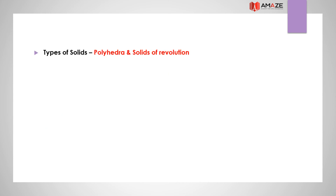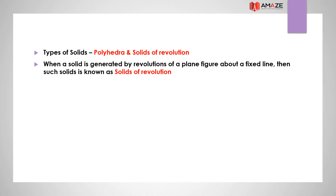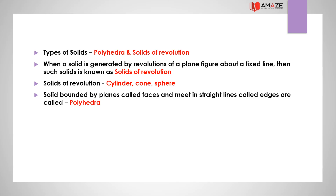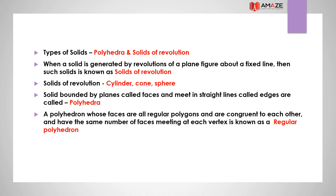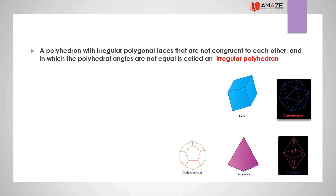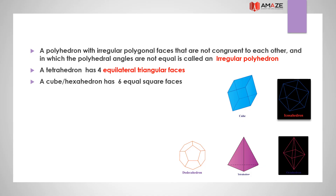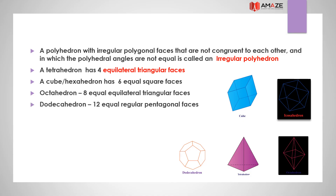Types of solids: polyhedra and solids of revolution. When a solid is generated by revolution of a plane figure about a fixed line, it is called a solid of revolution — for example, cylinder, cone, and sphere. Solids bounded by planes called faces, meeting in straight lines called edges, are called polyhedra. A regular polyhedron has all regular polygonal faces congruent to each other with the same number of faces meeting at each vertex, and all polyhedral angles are equal. A tetrahedron has 4 equilateral triangular faces. A cube or hexahedron has 6 equal square faces. An octahedron has 8 equilateral triangular faces. A dodecahedron has 12 equal regular pentagonal faces. An icosahedron has 20 equal equilateral triangular faces.